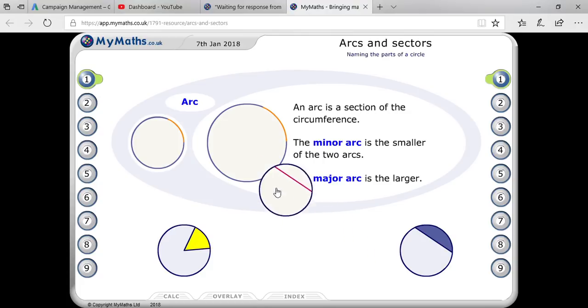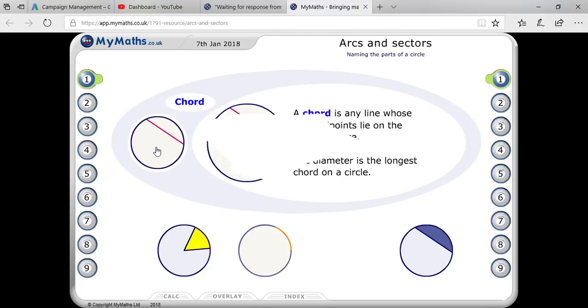Next is your chord. A chord is any line that is drawn inside the circle whose two points touch the circumference. So chord is basically one point of the circle to another point. When two points on the circumference meet, that will be your chord, excepting the diameter.